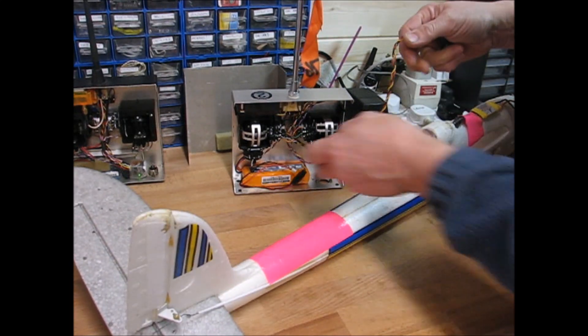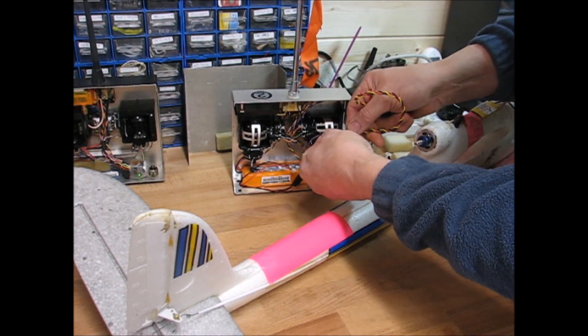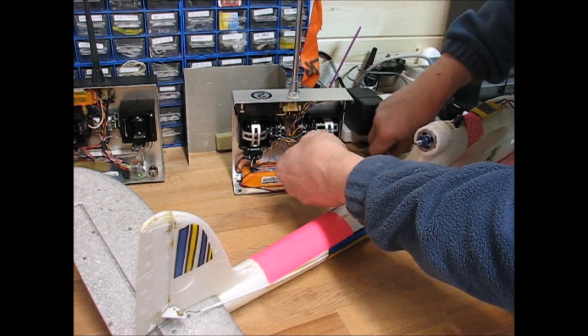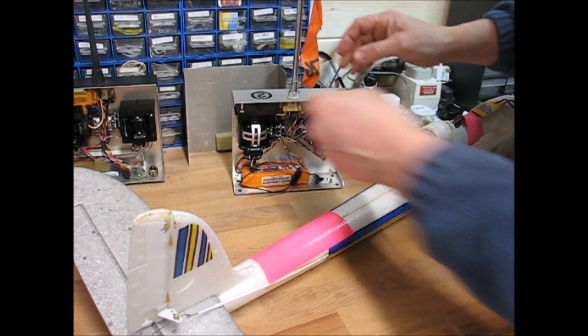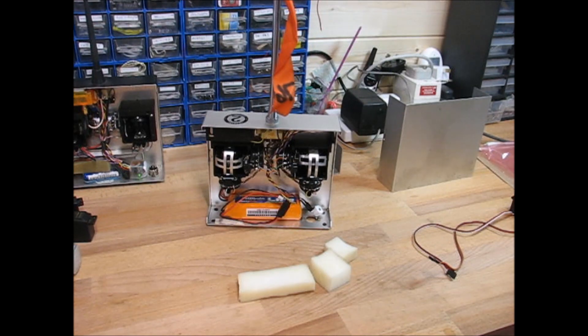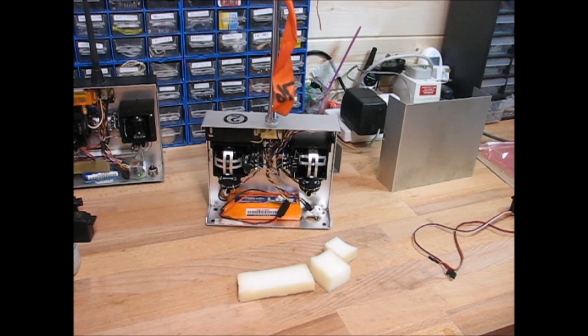There you go, that's your single channel function. When I unplug this it'll go to right rudder again until I put the buzzer back in. There you go. So there you go, that's the DigiSpark four channel proper encoder. Cheers!